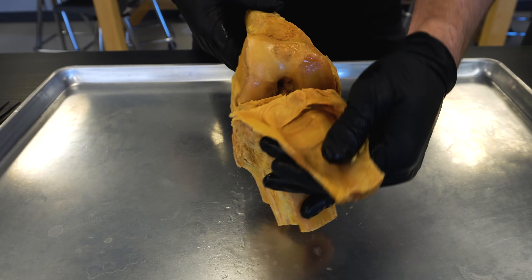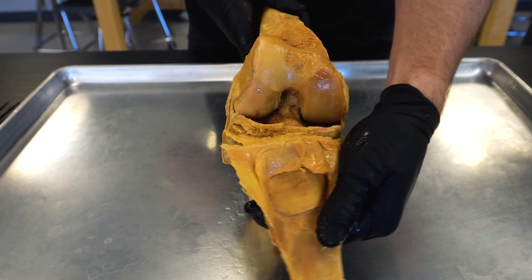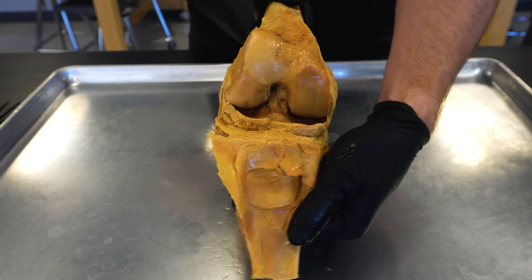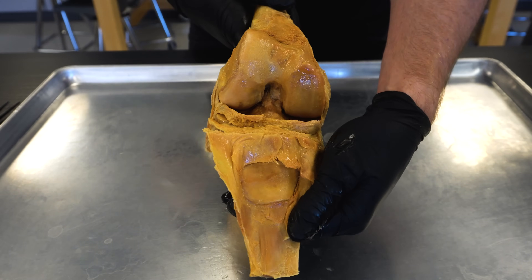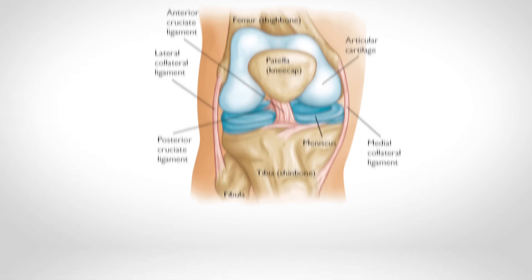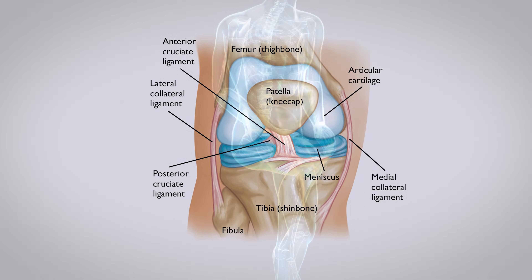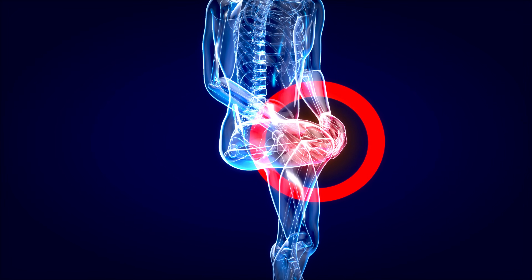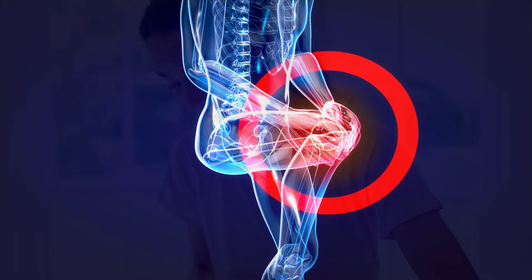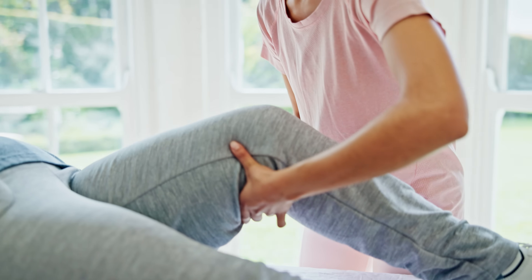Have you ever seen what an arthritic knee looks like? Here is a real human knee with multiple degenerative changes, the primary one being osteoarthritis. Today I'm going to show you what's wrong with this knee while showing you many of the cool ligaments like the ACL, the MCL, and even what's left of each meniscus. We'll also talk about what causes knee degeneration and this type of pain, and more importantly, what you can do to prevent and treat it.